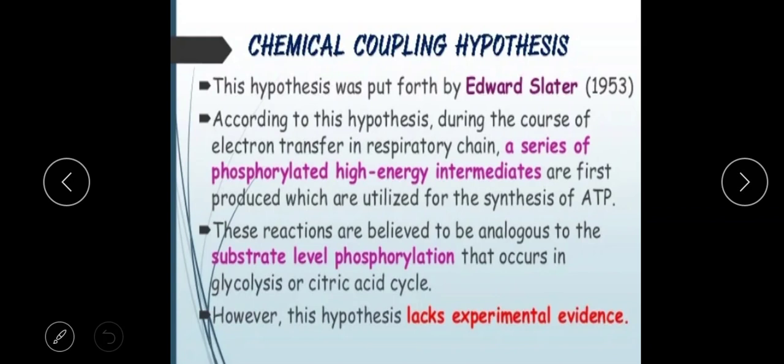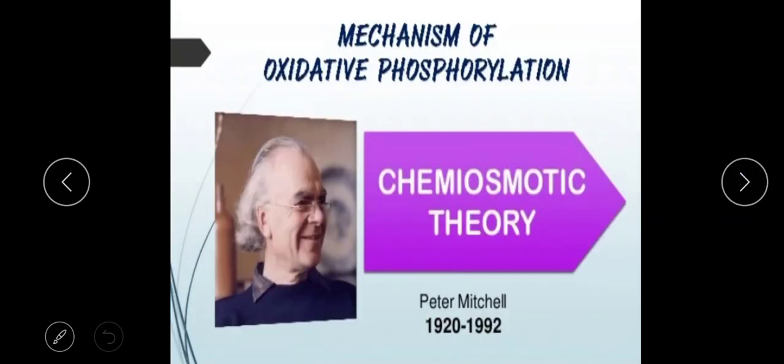This chemical coupling hypothesis proposes that high-energy intermediates are formed and then phosphorylated to generate ATP. However, this hypothesis does not have any experimental evidence to support it, and therefore it has been largely dismissed.